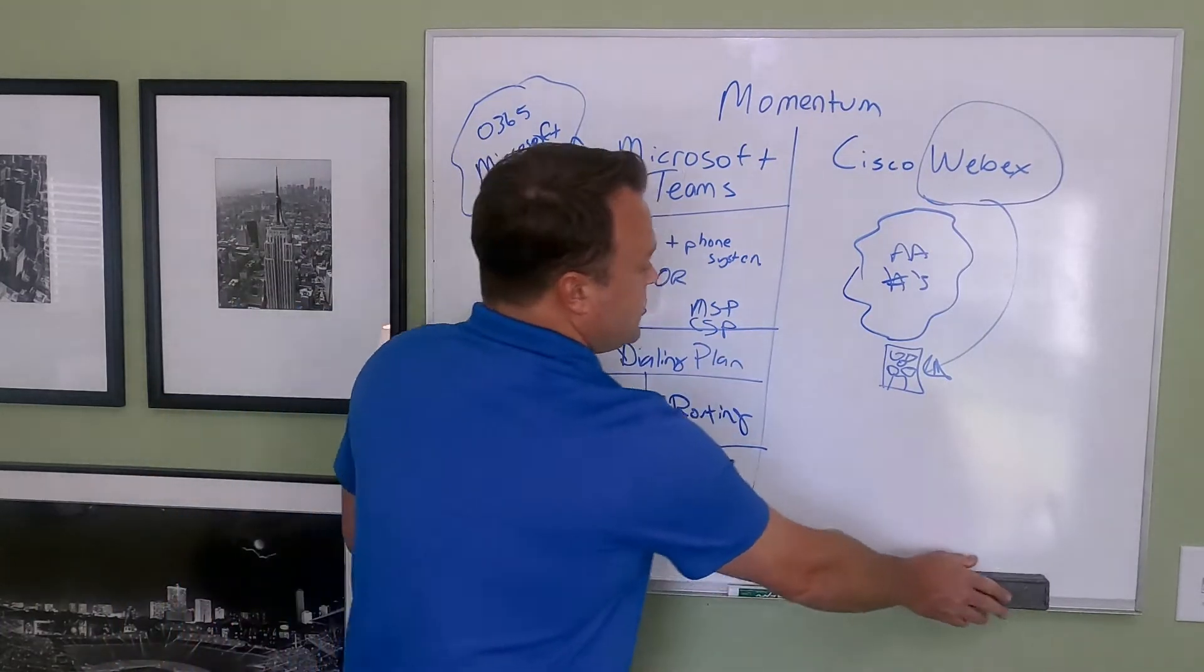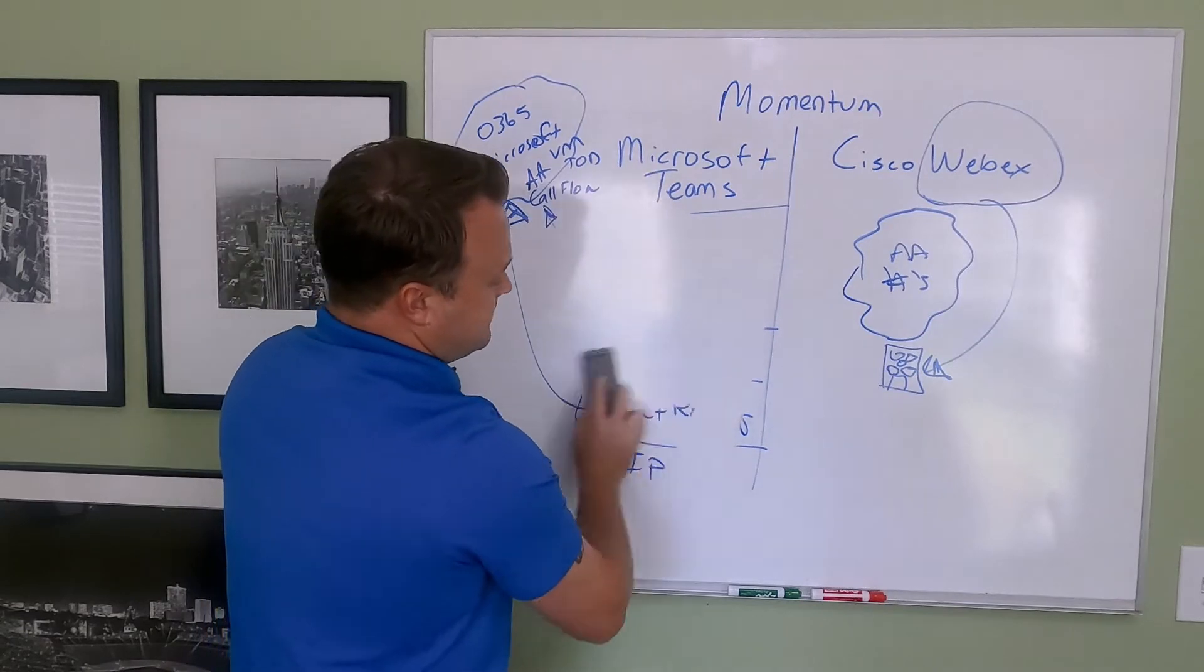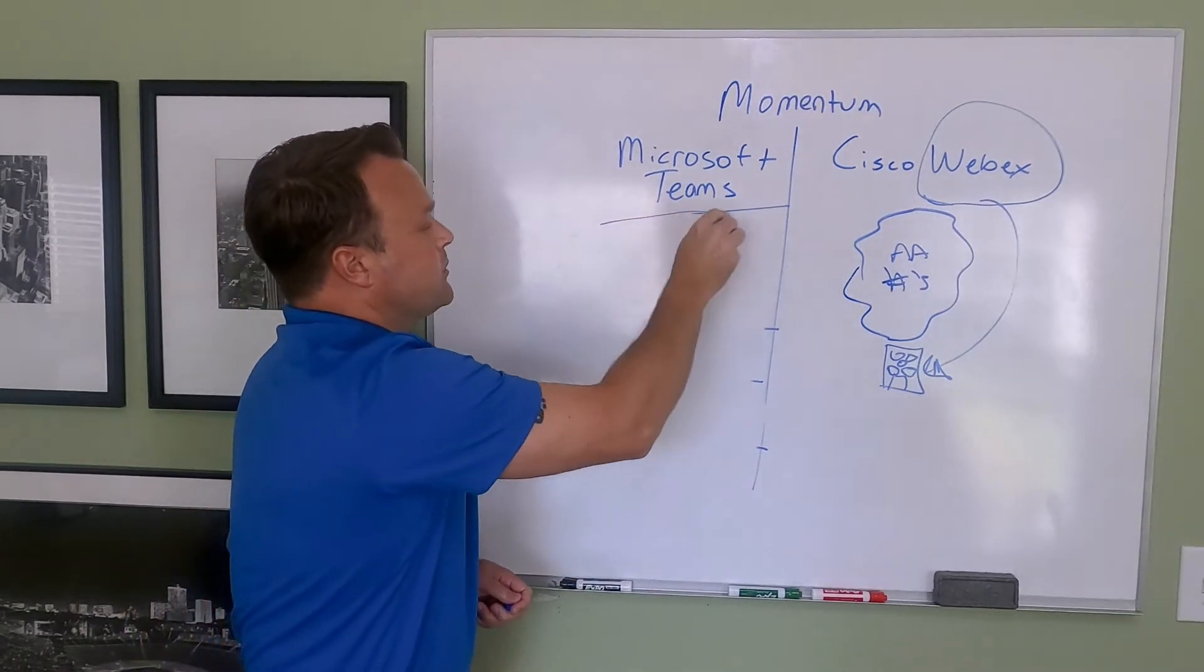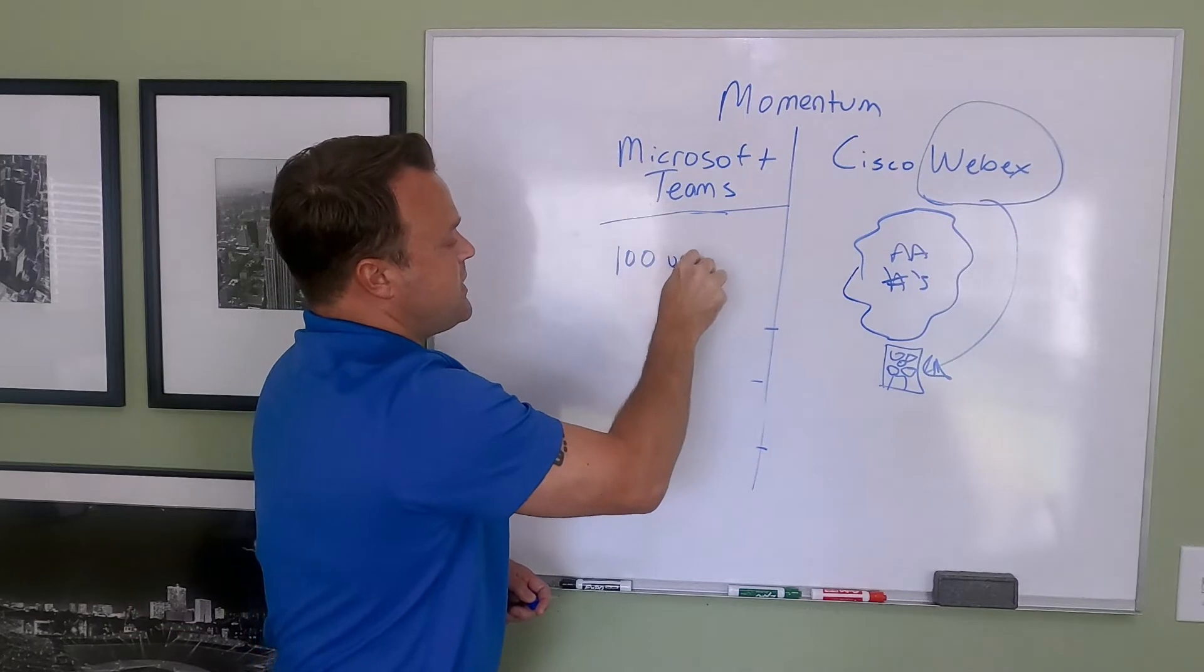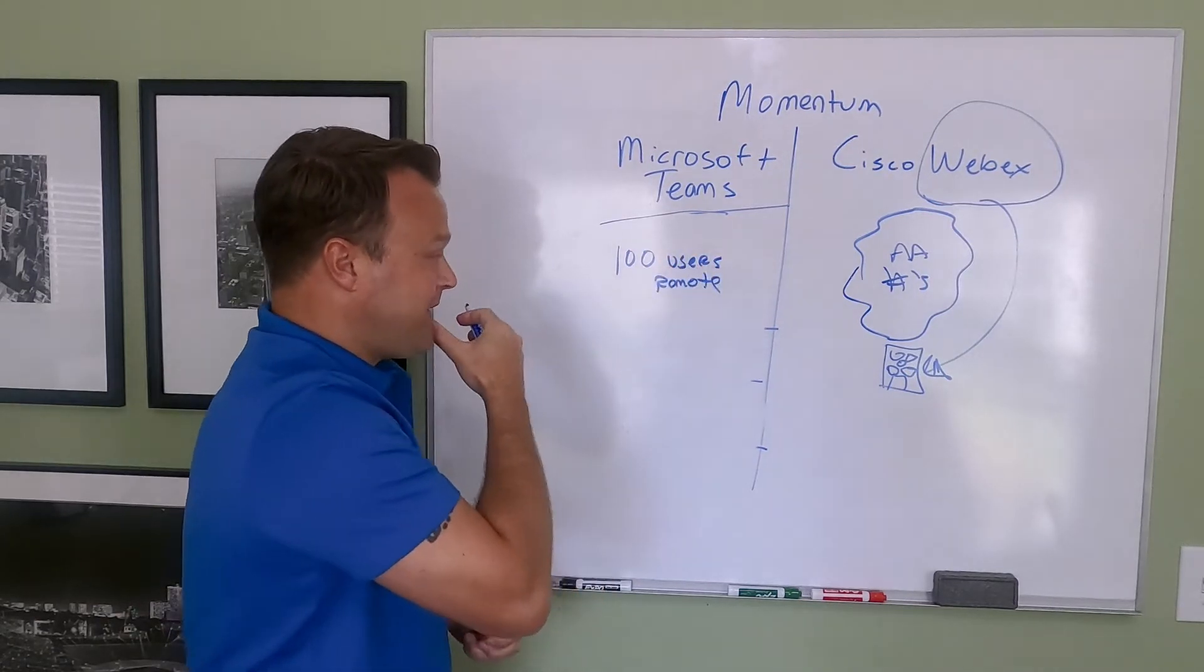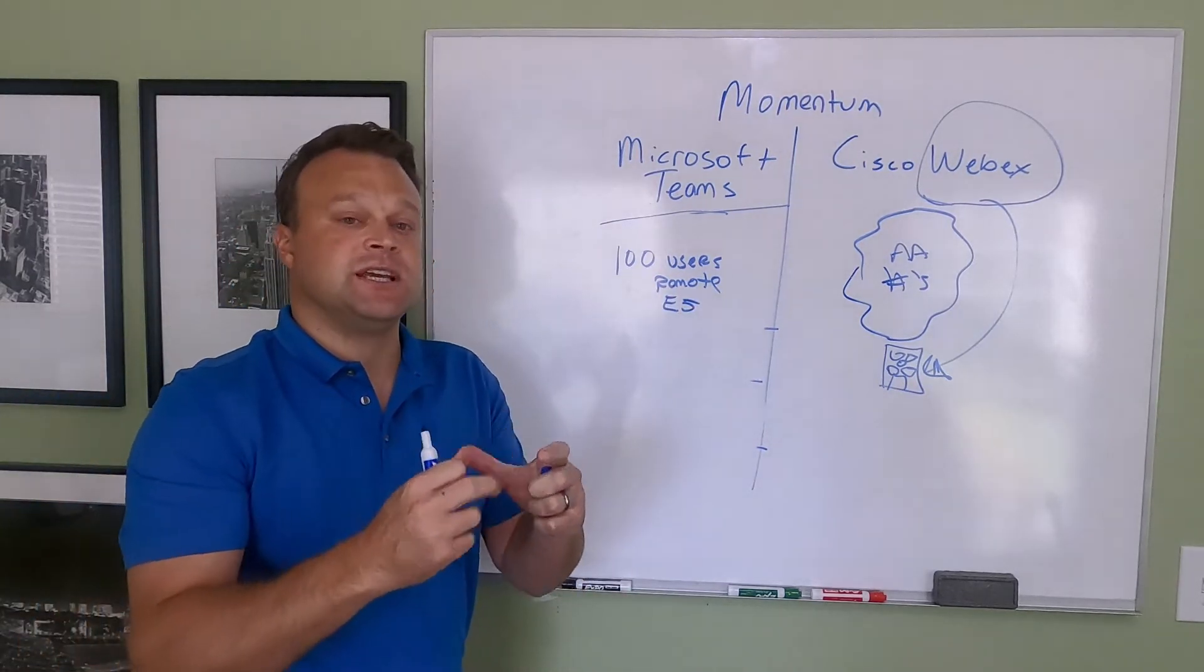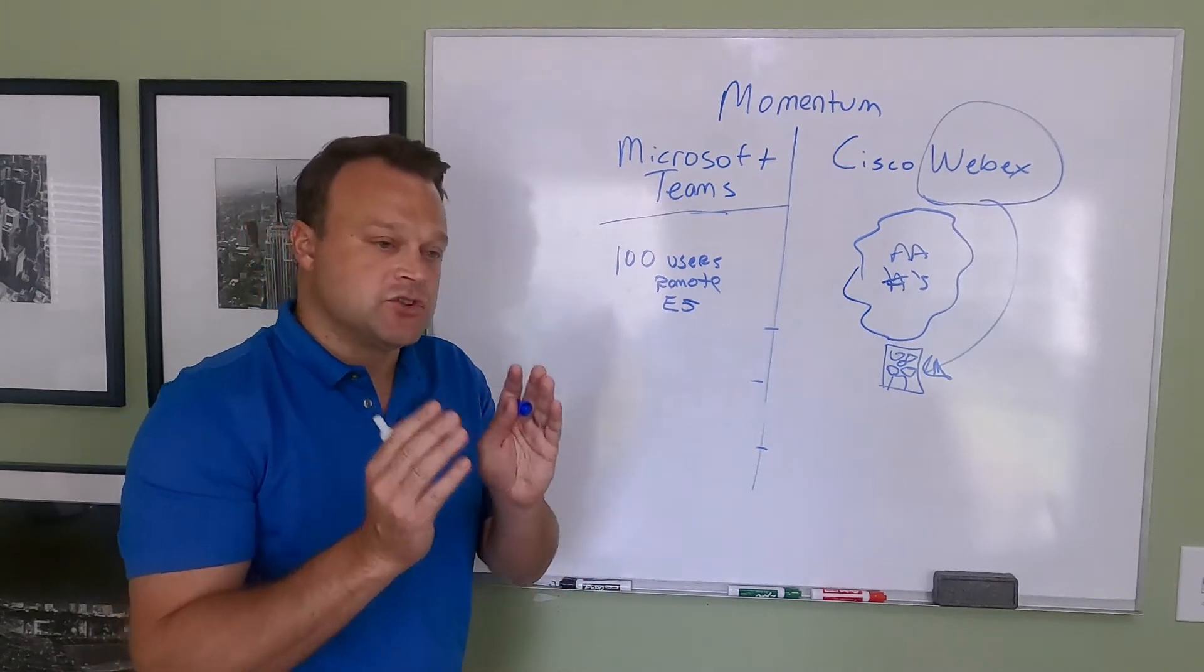Now, a good use case for Microsoft Teams where Momentum can be of assistance to you is if you are an organization, let's say you have 100 users that are remote, and they're carrying E5 licensing to where they're going to be working from home and they're remote, they're using Teams as their desktop application, their mobile app, it works great. It services them.